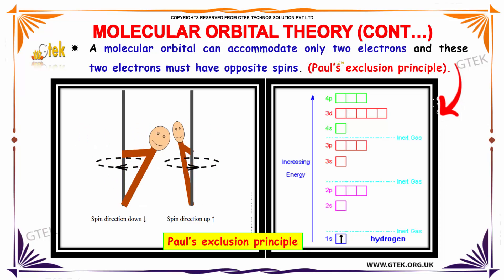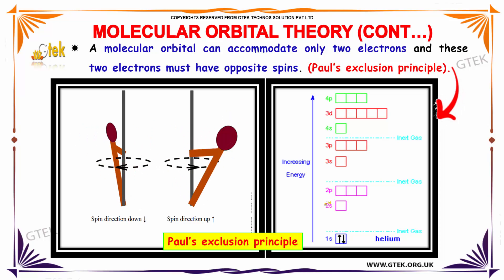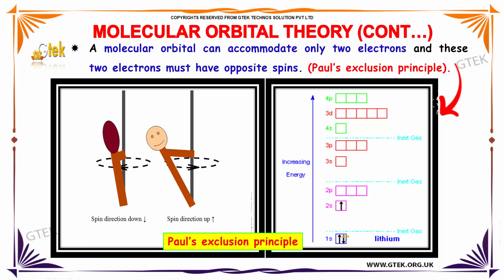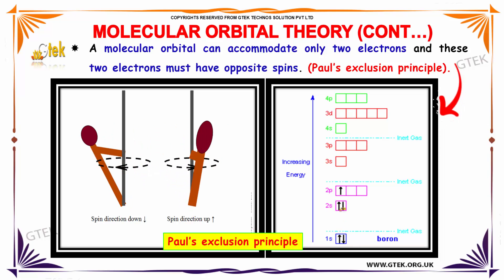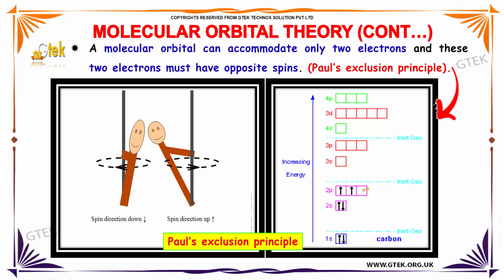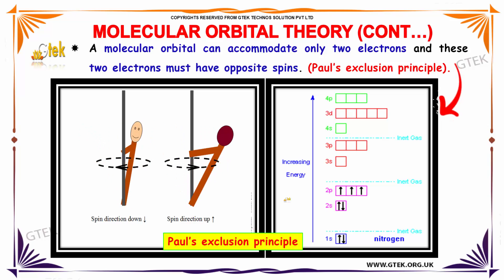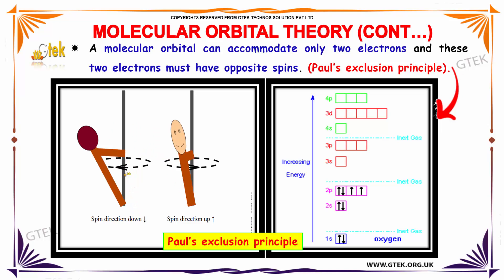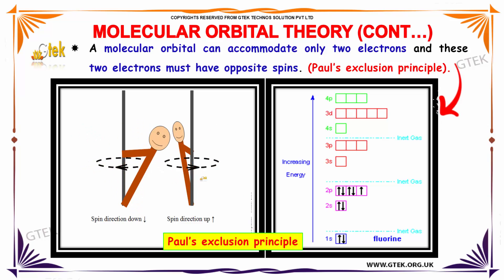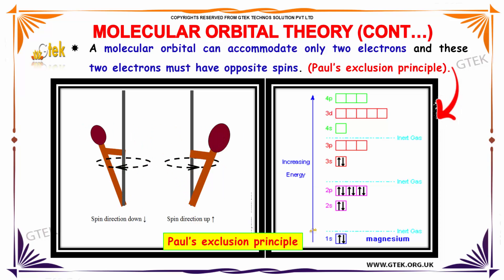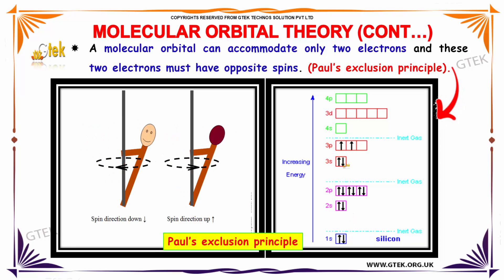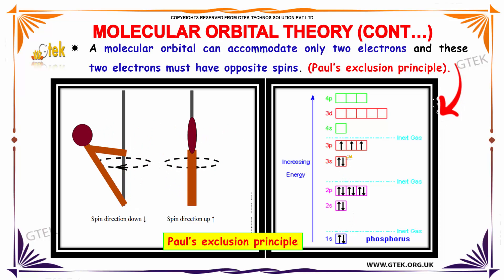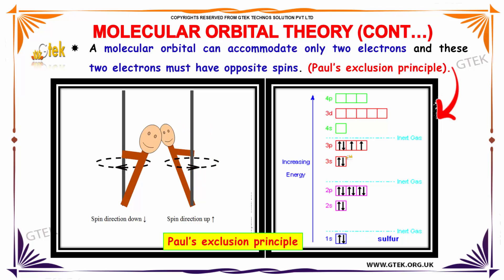A molecular orbital can accommodate only two electrons, and these two electrons must have opposite spins. You can see it here — this direction is spin down and this direction is called spin up. Here is the increasing energy and you are able to see the electrons. This is how the atoms are.